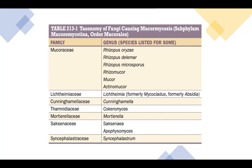Harrison's presents a table listing families including Mucor, Lichtheimia, Cunninghamella, Thamnostylum, Mortierella, Saksenaea, and Cunninghamella. Of all these families, do not memorize everything — go straight to family Mucoraceae and take note of Rhizopus, because clinically the most common genera causing mucormycosis are Rhizopus and Mucor. Just remember those two genera; everything else you can leave behind for the exam.